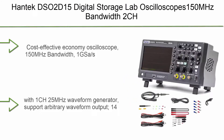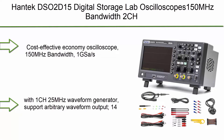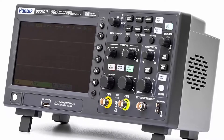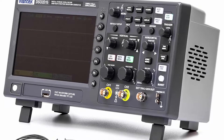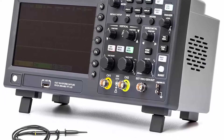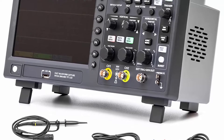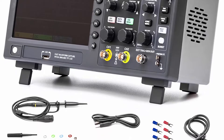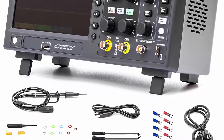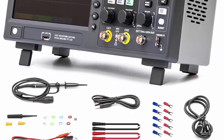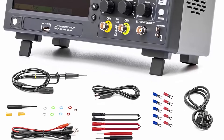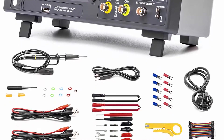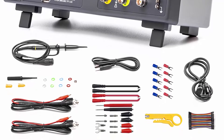Top 10: Hantek DSO-2D15 Digital Storage Lab Oscilloscope — 150 MHz Bandwidth, 2-Channel, 1 GSA/s, 8M Memory Depth with 1-Channel 25 MHz Waveform Generator supporting arbitrary waveform output. Features 14 kinds of trigger modes, 5 kinds of serial protocol triggers and decodes, 32 kinds of auto measurements with statistics, 3-digit digital voltage meter, 6-digit hardware frequency indicator, 2 sets of DBM, and SCPI remote command control. Useful for communication, aerospace, national defense, embedded systems, computers, research, and education.